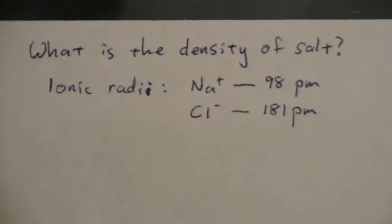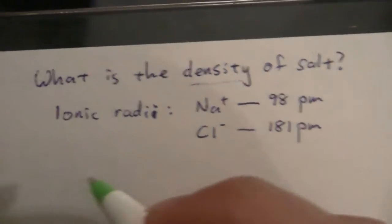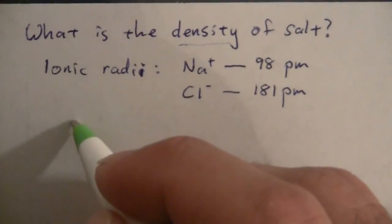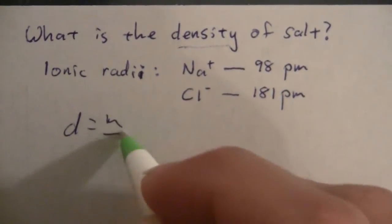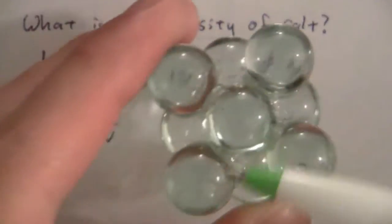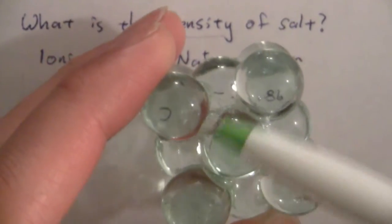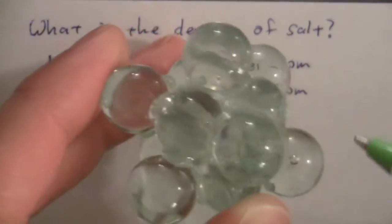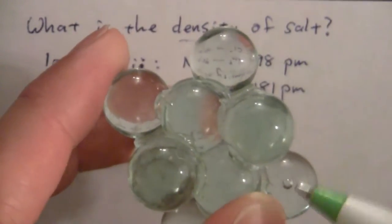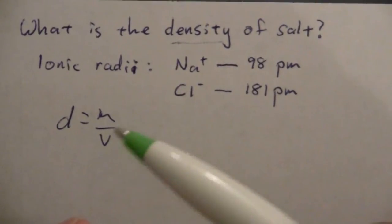So the way we're going to approach this, of course, we're looking for density. And density is mass over volume. So what we need is to find the mass and the volume. And so we can look at this and say, find out how many atoms of sodium and chlorine there are within the unit cell and then determine the volume of the unit cell based on the radii. And that will then be used to find the density.